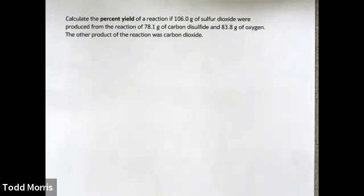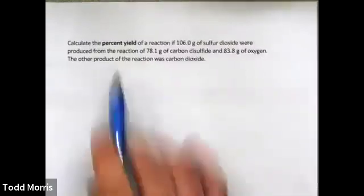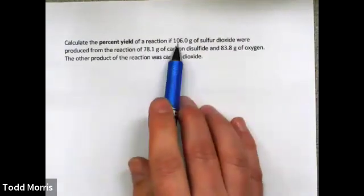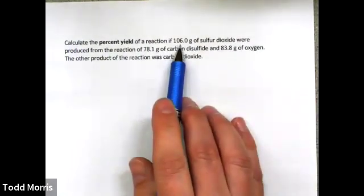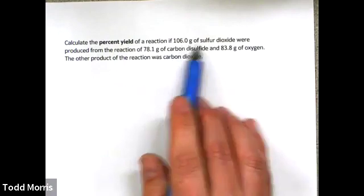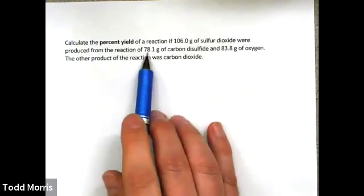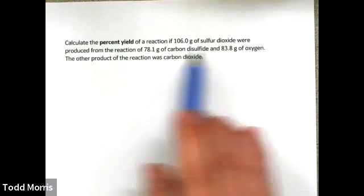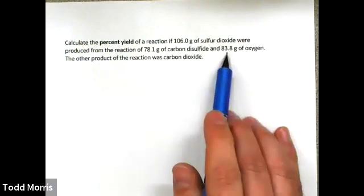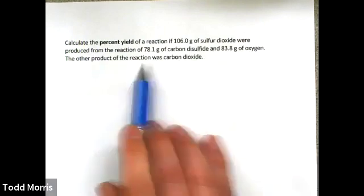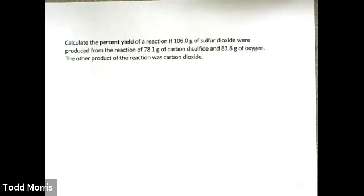Let's do an example calculation of the type you'll need to do for this week's lab. We're asked to calculate the percent yield of a reaction if 106.0 grams of sulfur dioxide were produced from the reaction of 78.1 grams of carbon disulfide and 83.8 grams of oxygen. The other product of the reaction was carbon dioxide.